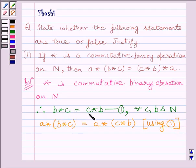Now, a star bracket c star b can be written as bracket c star b close bracket star a.